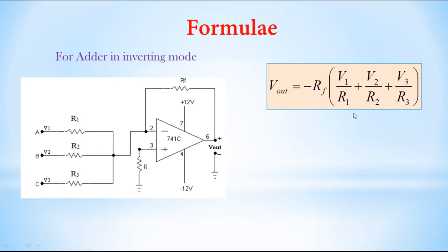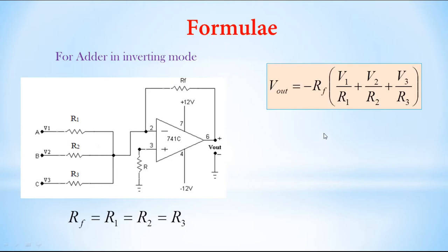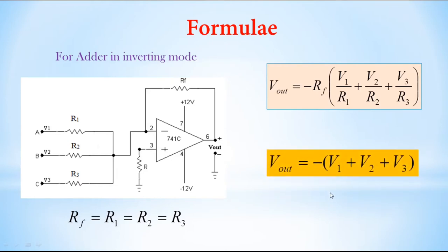This is the general formula for the summing amplifier. To make this a true adder circuit, we apply the condition RF equals R1 equals R2 equals R3. Substituting this, we get Vout equal to minus of (V1 plus V2 plus V3). Since input is given to the inverting terminal, we get the minus sign. For a non-inverting mode adder, the output would be the positive sum of the inputs.